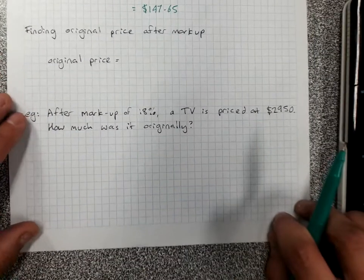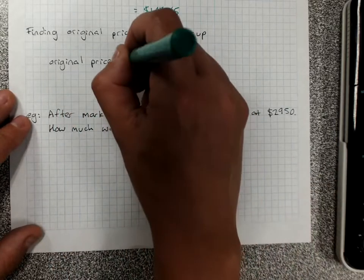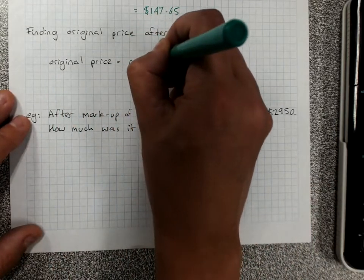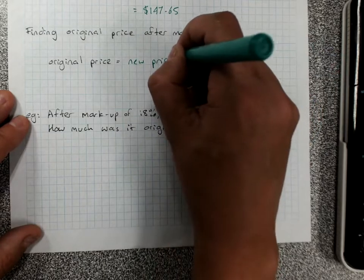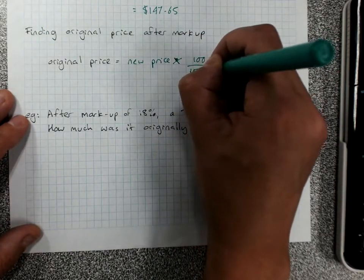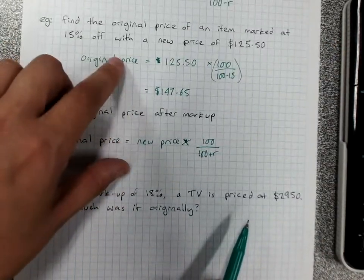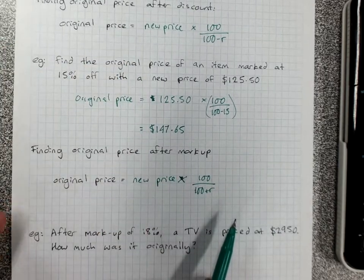Finding the original price after a markup. So again we can have a formula, new price times 100 over 100 plus R. So I've taught you the formula, you can see that it works for this one, you will be able to use that.